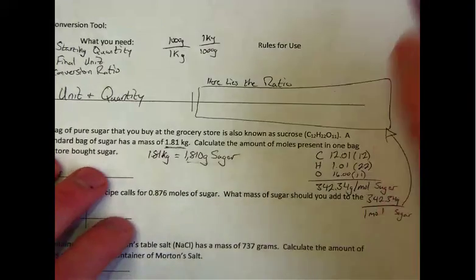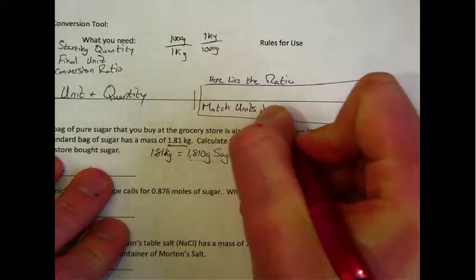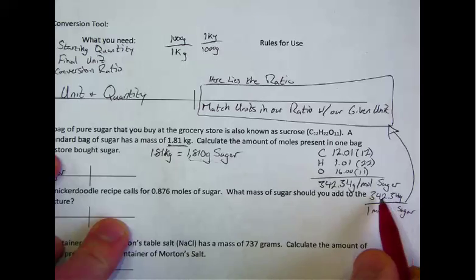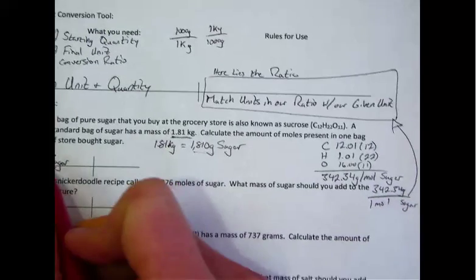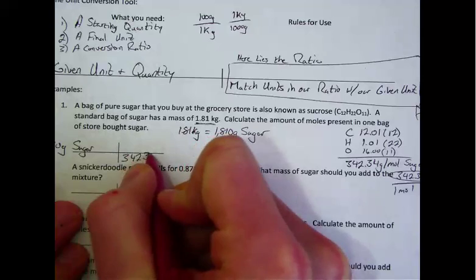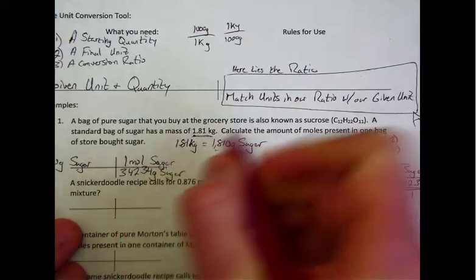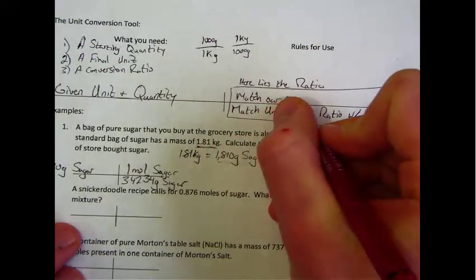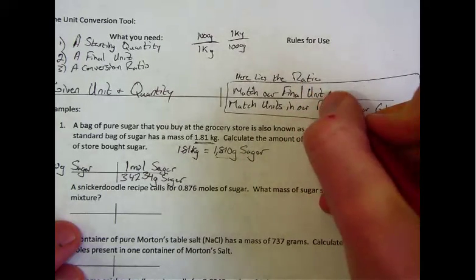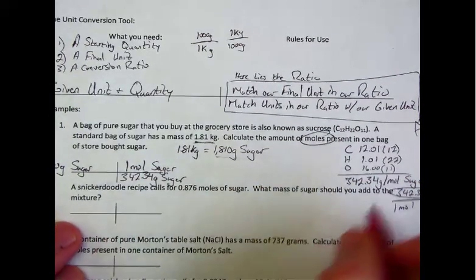Now, which part of the ratio do we use? Down at the bottom right-hand corner, we need to match units in our ratio with our given unit. So when I look down here, I can either put the grams at the bottom or I can put the moles at the bottom. Since I'm given grams, and I need to match grams of sugar, I need to write the grams right here. So 342.34 grams of sugar. And then what's left is our one mole of sugar up on the top right. So that means that we match our final unit in our ratio with the top right. And again, look at that, we're looking for moles and we're left with moles. Now, in order to use this, once this is all set up, rules for use, step one, multiply across the rows.